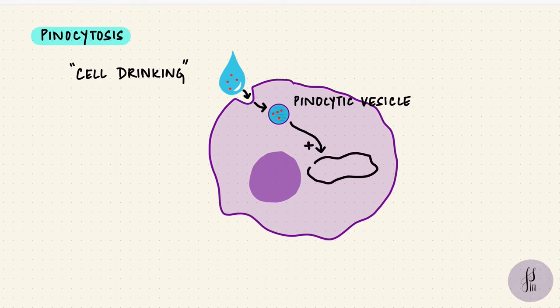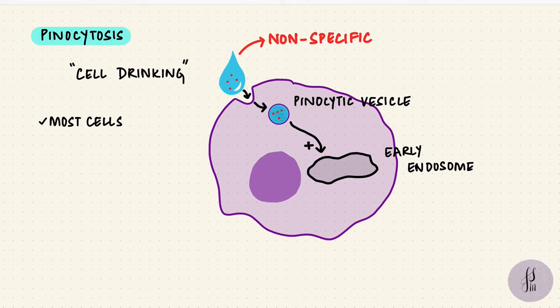They will then fuse with an endosome for further metabolism. Unlike phagocytosis, pinocytosis is seen in most cells, for example in the small intestine. But it's very nonspecific. The cell is just gulping down the ECF with whatever is in it.